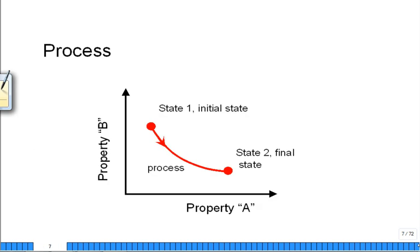Now we put together processes on property diagrams. We may start with state one and describe the state by the value of property A at state one and property B at state one. We could put a dot on that property diagram saying that's where state one is. It could undergo a process to a final state two. So what happened to property A? Did property A increase or decrease during the process? Increase. How about property B? Decrease.